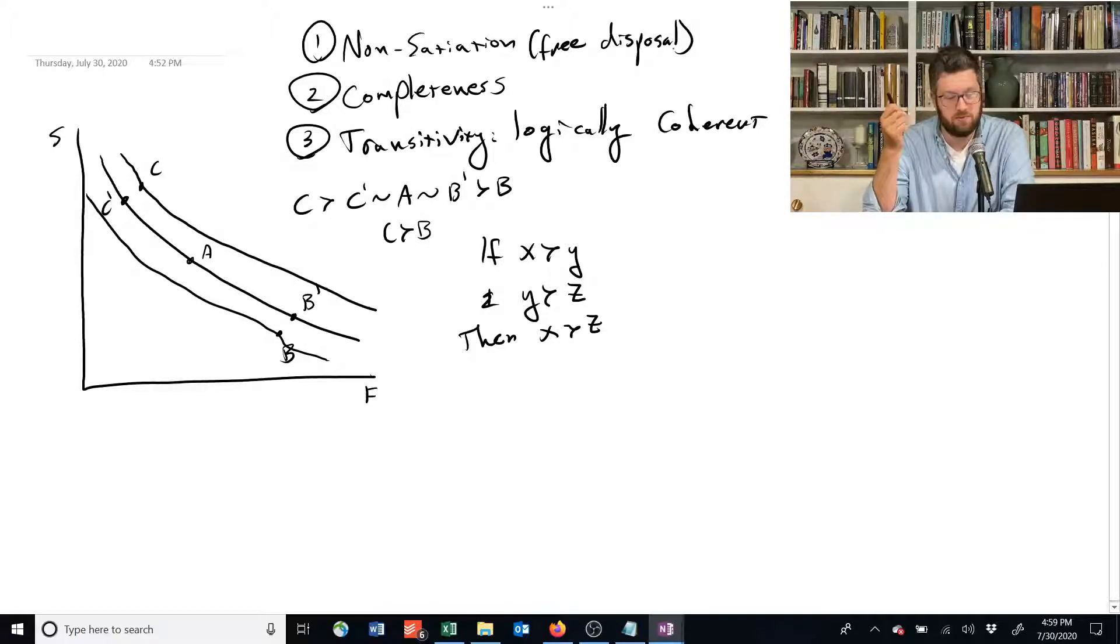The transitivity assumption means that these indifference curves—now there are more than one—they can't cross. I can't have another indifference curve that looks like this.